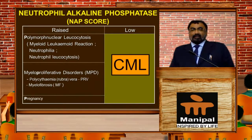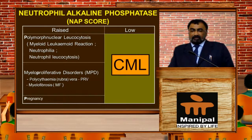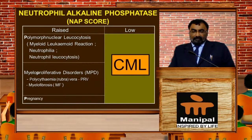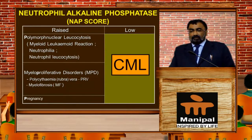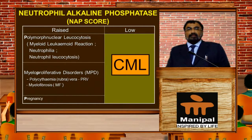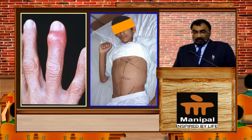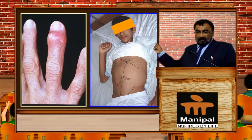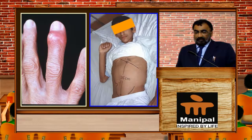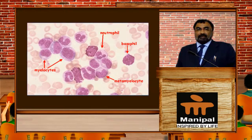The NAP — neutrophil alkaline phosphatase — score: a raised score is seen in polymorphonuclear leukocytosis, myeloproliferative disorders, or in pregnancy, whereas a low score is characteristic of chronic myeloid leukemia. In this picture, you can see the patient has pallor, and on the right side there is massive splenomegaly.